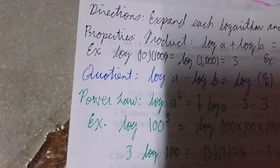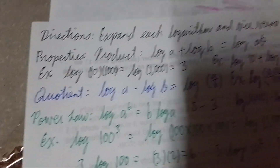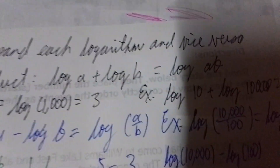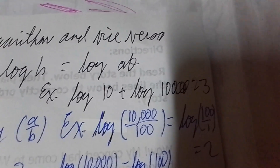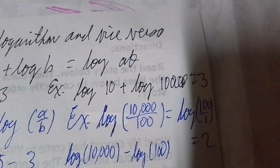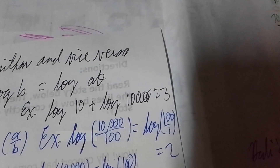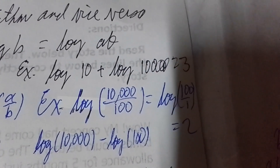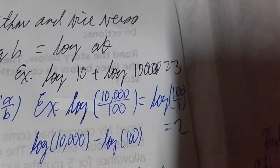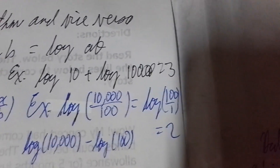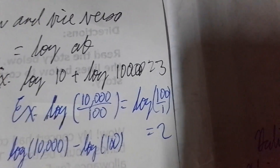Next, the quotient law. For the quotient law, we have log of A minus log of B, which is equivalent to log of A divided by B. For example, log of 10,000 divided by 100 — that's 100, and log base 10 of 100 is 2. Or using the property: log base 10 of 10,000 is 4, log base 10 of 100 is 2. 4 minus 2 is 2. Same answer.